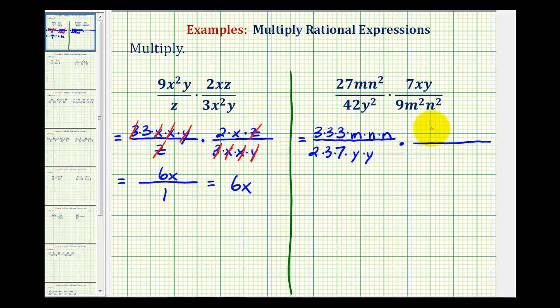Here we have 7xy, which is just seven times x times y. Nine is equal to three times three, so we'll have three times three. M² is two factors of m, and n² is two factors of n. So we have m times m times n times n.